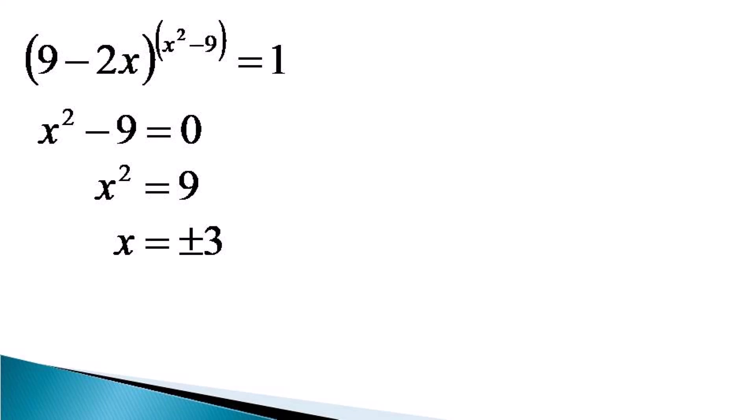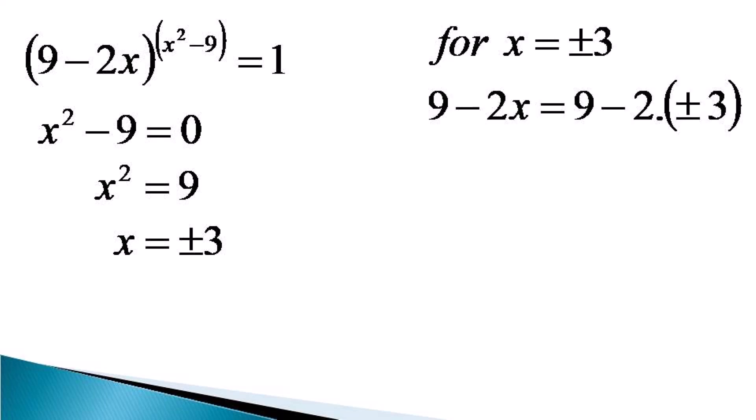These are two values. Let us check both to verify whether the base of the exponent is non-zero. So 9 minus 2x becomes 9 minus 2 times (±3), which gives 3 and 15 respectively. Both these values are non-zero, so x equals plus or minus 3 are both solutions to this equation.